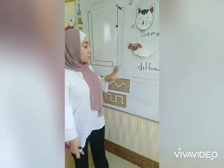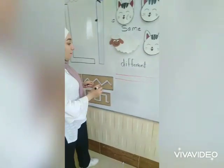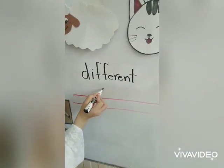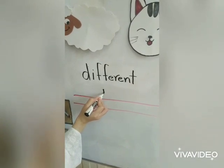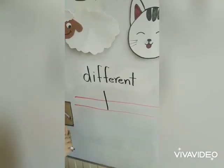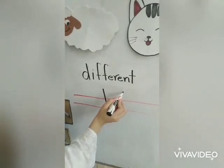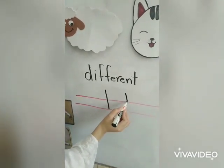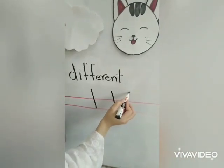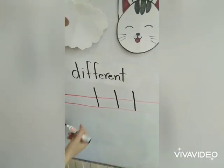And now, let's try the lower case L. Lower case L — we start at the top, draw a straight line down. And guess what? That's it, lower case L. We start at the top, draw a straight line down — lower case L.